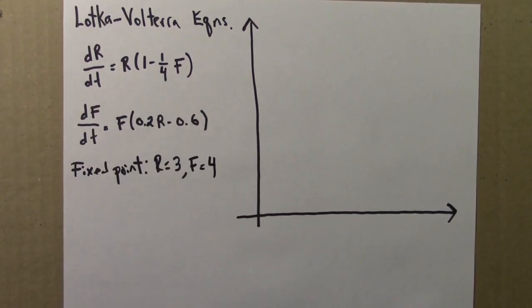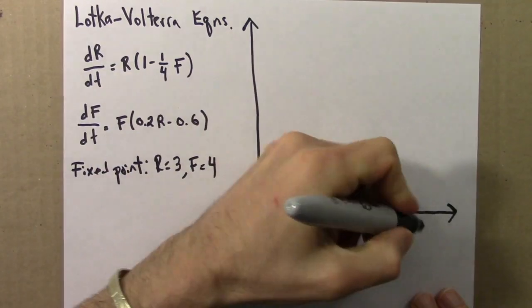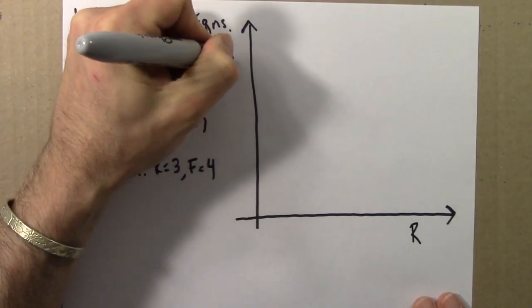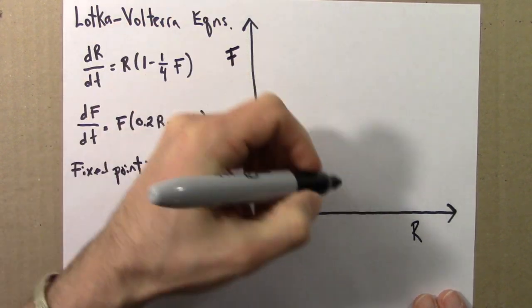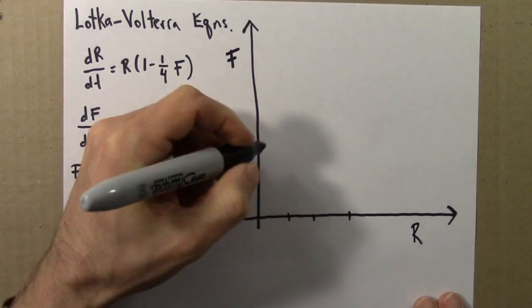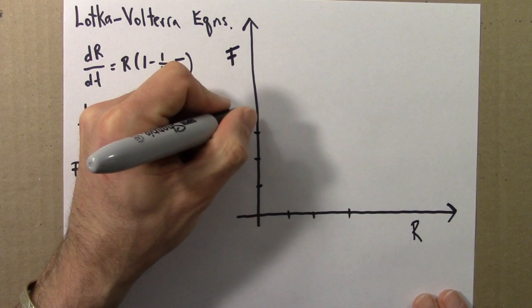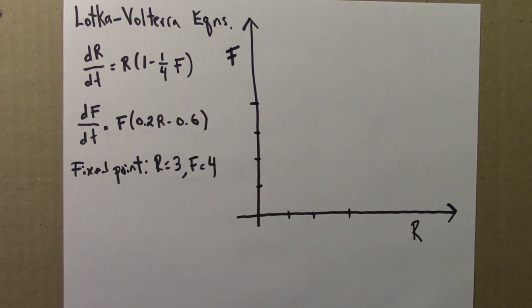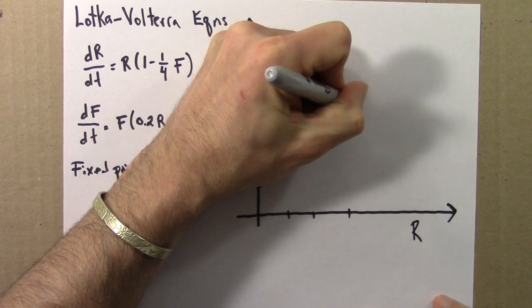r equals 3, f equals 4. And let's see, put that on the phase plane. Here are the rabbits. Here we have foxes. 1, 2, 3. 1, 2, 3, 4. So I will draw that on the red dot.